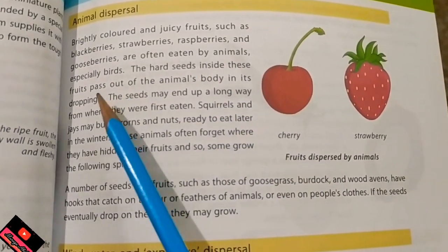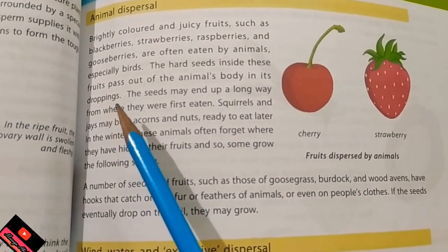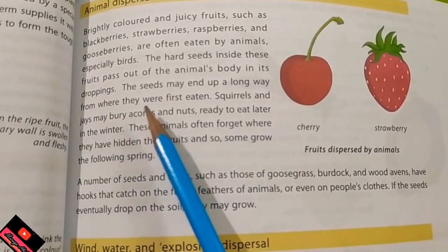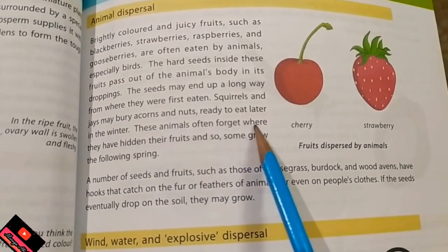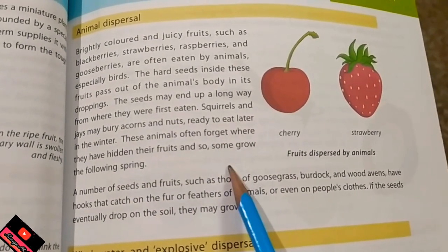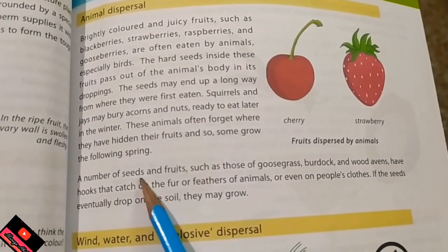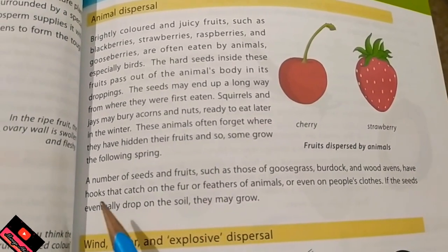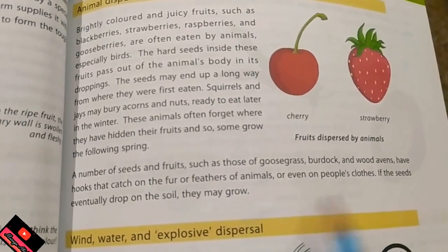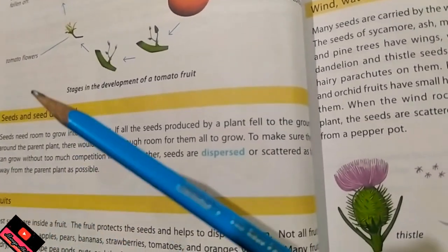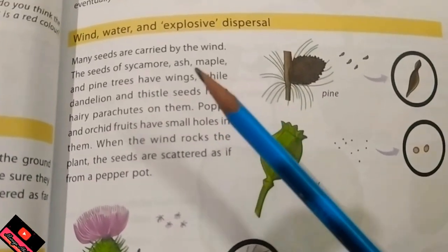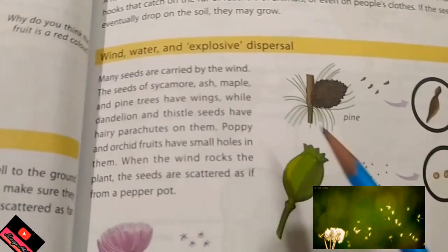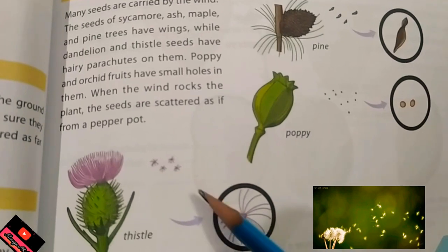When animals eat brightly colored juicy fruits — blackberries, strawberry, raspberry, gooseberry — especially birds, the hard seeds inside pass through the animal's body and are deposited far from where they were eaten. Squirrels and jays may bury acorns or nuts to eat later in winter; these animals often forget them and the seeds develop into new plants. Seeds and fruits such as gooseberries and burdock have hooks and are caught in the feathers or fur of animals to spread further. Another way is by wind.